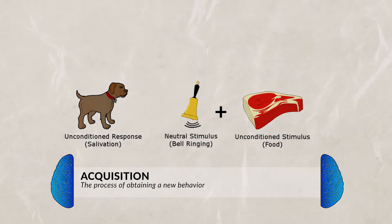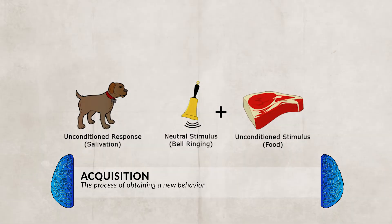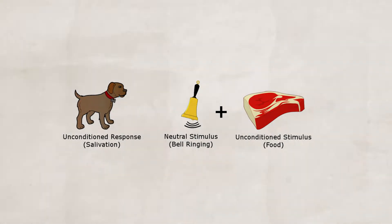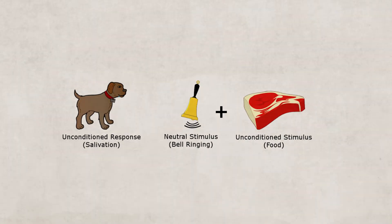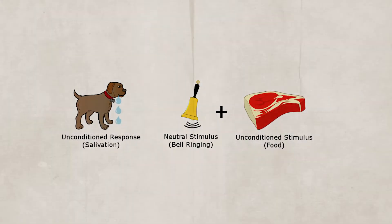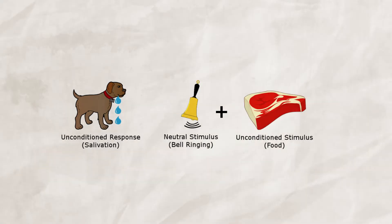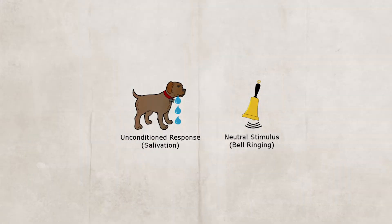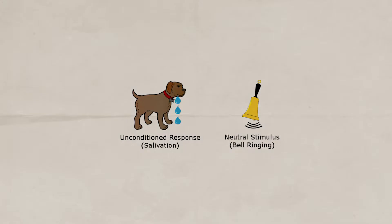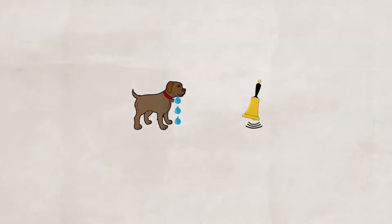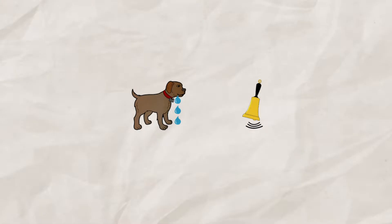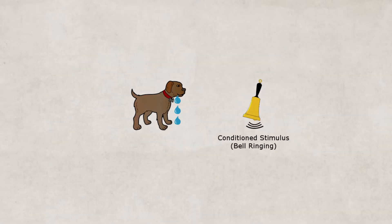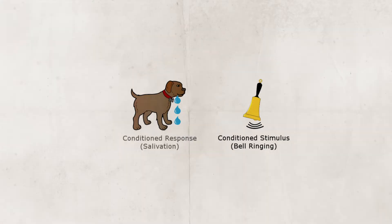Acquisition is when the unconditioned stimulus and the neutral stimulus are paired together in order to attempt learning of a conditioned response. So Pavlov is pairing the food with the bell and conditioning the dog to show the response of drooling to a new stimulus. Eventually Pavlov would take the food away and just have the dog hear the bell, and after being conditioned, the dog began to salivate at the sound of the bell, anticipating that the food was to come. In Pavlov's experiment, after the conditioning occurred, the bell became a conditioned stimulus, and the dog drooling to the bell became a conditioned response.